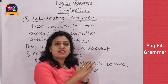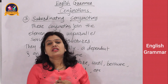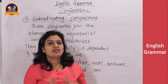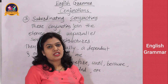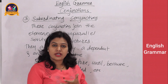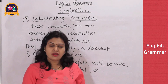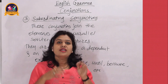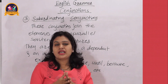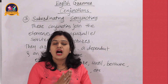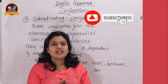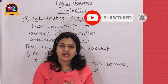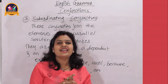So friends, we have learned what conjunctions are and the three types of conjunctions: coordinating conjunctions, correlative conjunctions, and subordinating conjunctions. Do watch till the end and share with us how this video was. For more videos, stay connected to Scholarly. Till then, take care, goodbye.